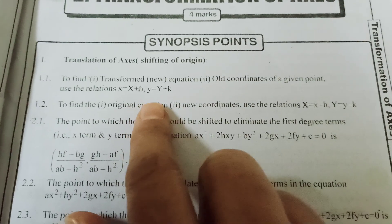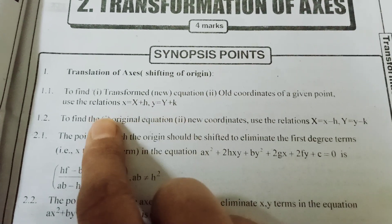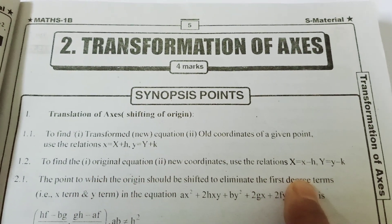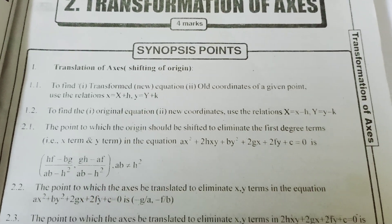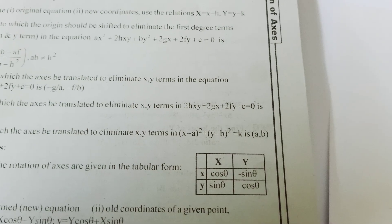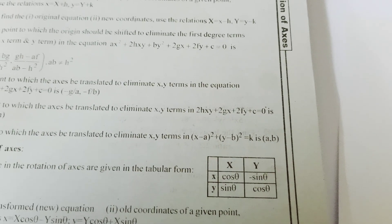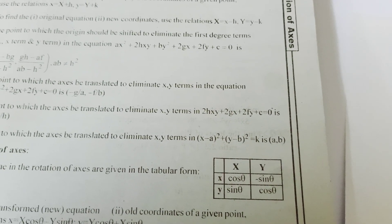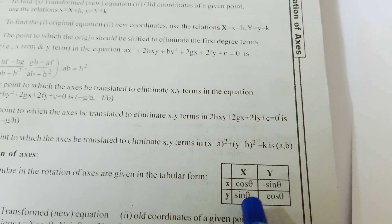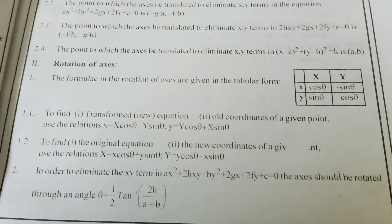Transformation of axes. The rotation formulas: cos squared theta plus sin squared theta equals 1. The transformation is: cos theta, minus sin theta; sin theta, cos theta. Small x equals capital X cos theta minus Y sin theta, and capital X equals x cos theta plus y sin theta. To eliminate the xy term, use theta equals half of tan inverse of (2h by a minus b).